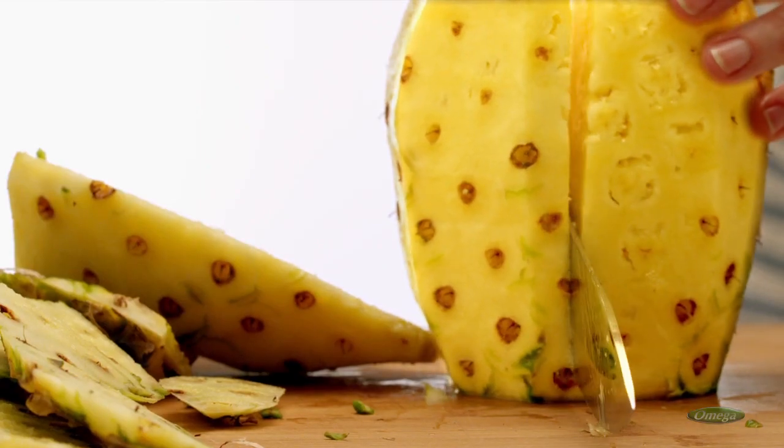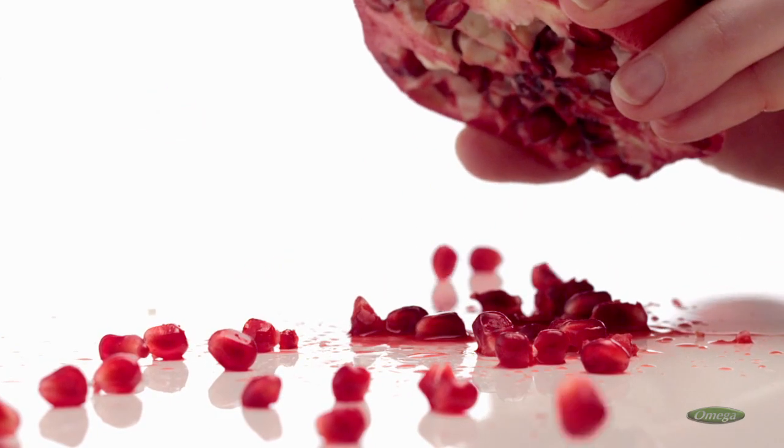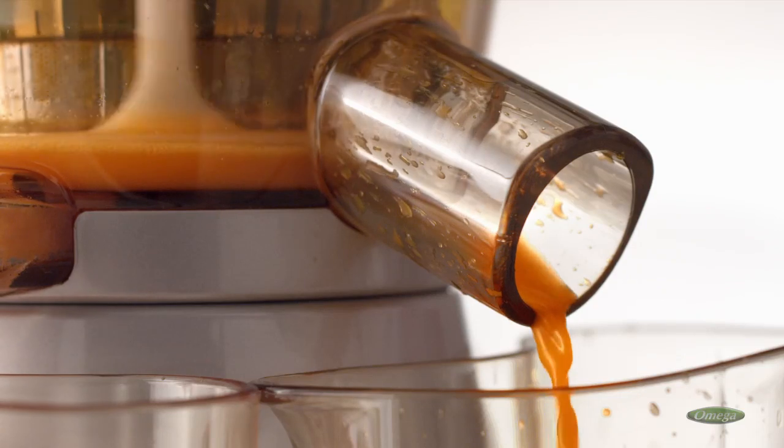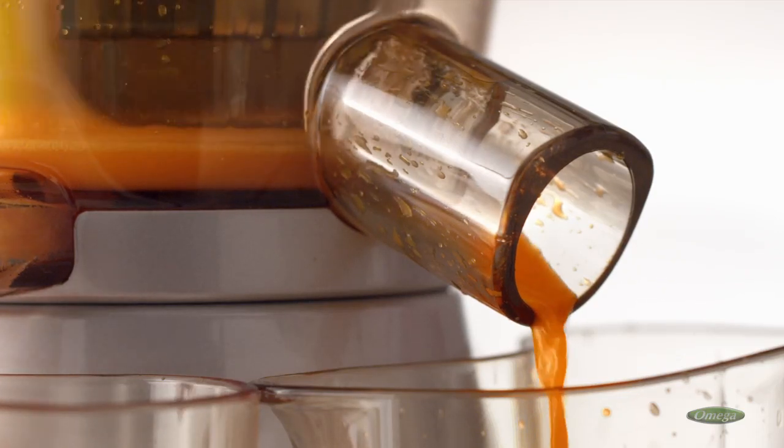Whether pineapples or carrots, or even seeded fruit like cherries and pomegranates, the Omega Vert delivers, making it easy to extract juice from your favorite fruits or vegetables.